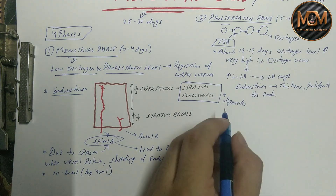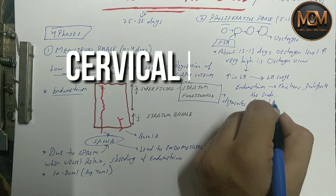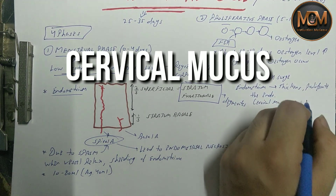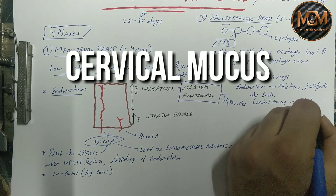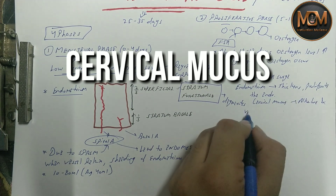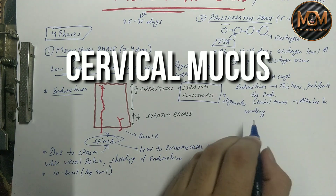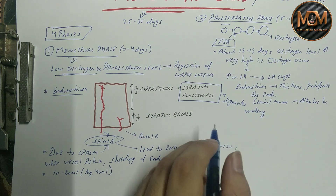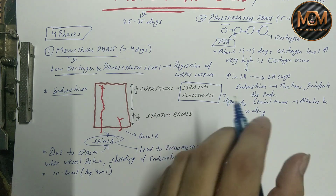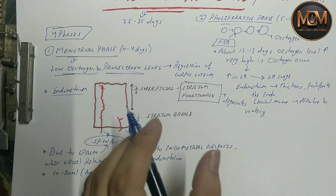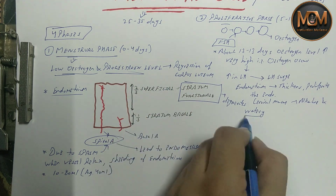One more point about the proliferative phase: cervical mucus increases and becomes alkaline and watery in this phase. This happens because ovulation is going to occur after this phase, so the watery and alkaline cervical mucus provides a favorable environment for the sperm to enter.